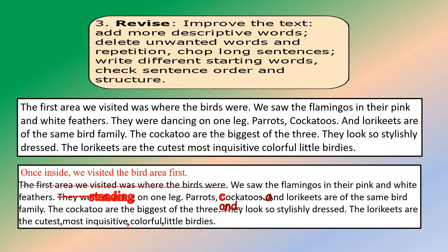Continuing with revision. The second paragraph as written: 'The first area we visited was where the birds were. We saw the flamingos in their pink and white feathers; they were dancing on one leg. Parrots and cockatoos and lorikeets are of the same bird family. The cockatoos are the biggest of the three; they look so stylishly dressed. The lorikeets are the cutest, most inquisitive, colorful little birdies.'